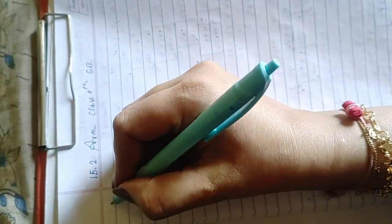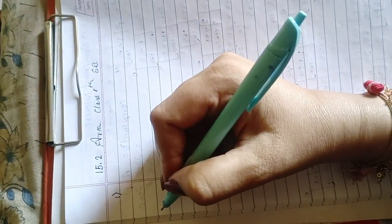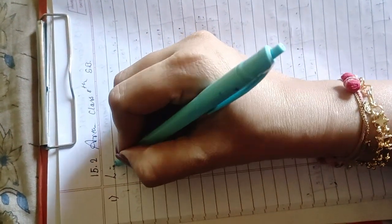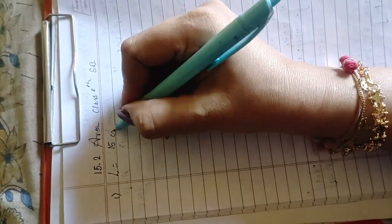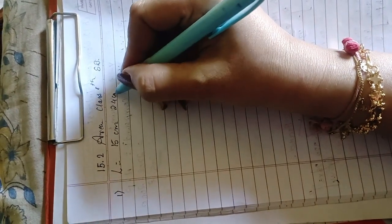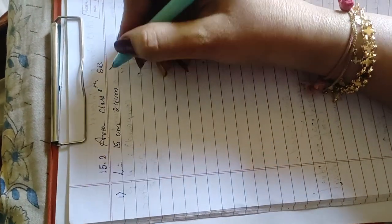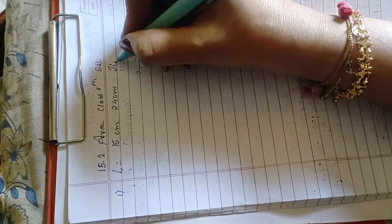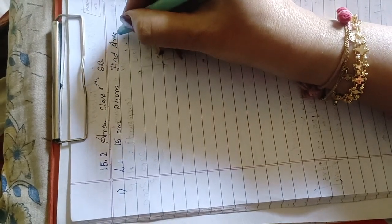Let us start with the first sum. The length of the diagonal is 15 cm and 24 cm. We have to find out its area. It is very simple and very easy sum.